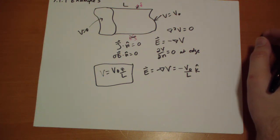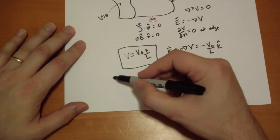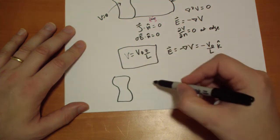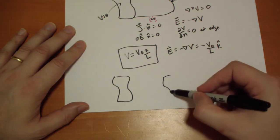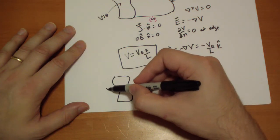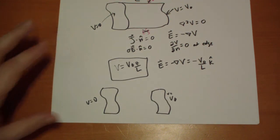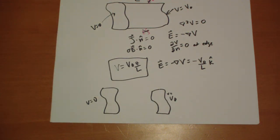So what would happen if we took away this conducting material, if we basically had two plates, same shape, and we're just sticking them out in space? So we have V naught over here, and we have V equals zero over here.